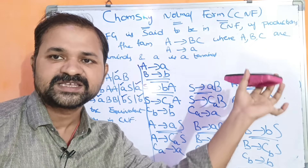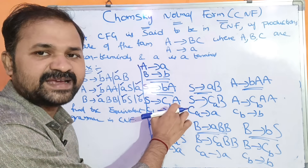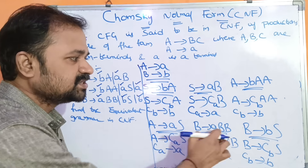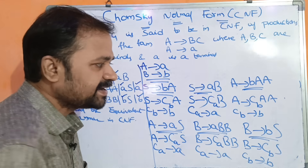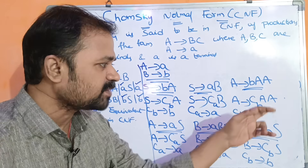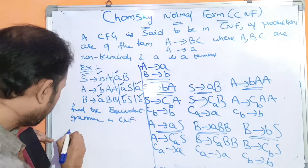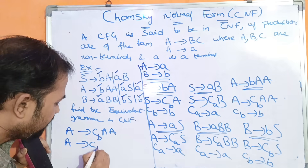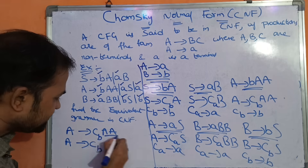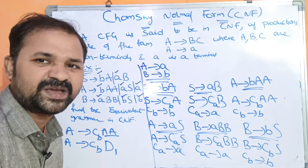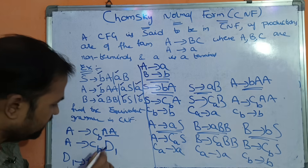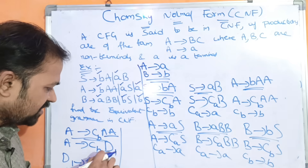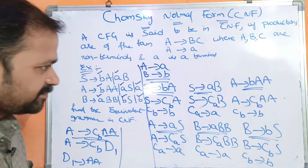Now observe whether these productions are in CNF. S implies CBA — CB is non-terminal, A is non-terminal — so this is in CNF. S implies CAB — two non-terminals — also in CNF. However, A implies CBAA is not in Chomsky Normal Form because it has more than two symbols on the right-hand side. So let us replace AA with D1, giving A implies CBD1, where D1 implies AA. Now CBD1 has two non-terminals — CB and D1 — so this is in CNF.